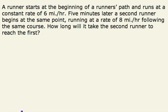A runner starts at the beginning of a runner's path and runs at a constant rate of six miles per hour. Five minutes later, a second runner begins at the same point, running at a rate of eight miles per hour, following the same course. How long will it take the second runner to reach the first?